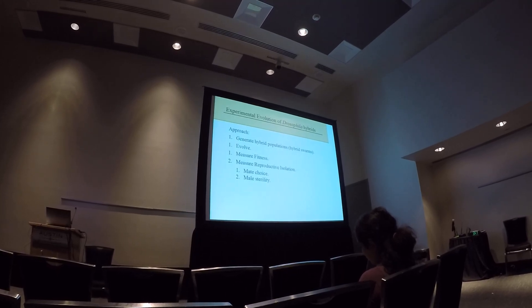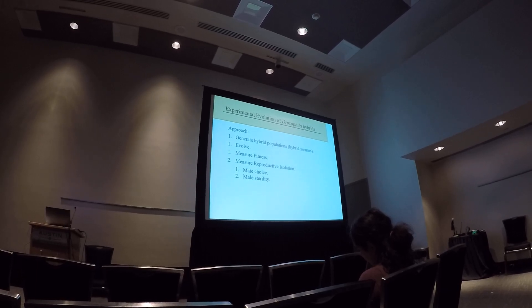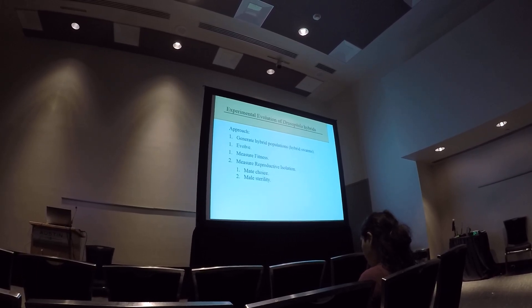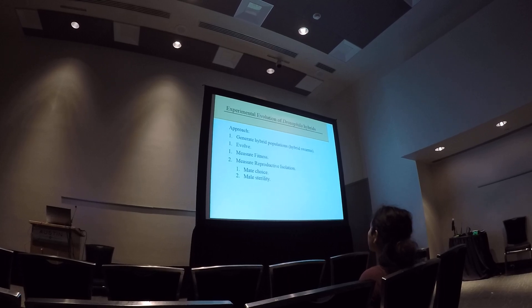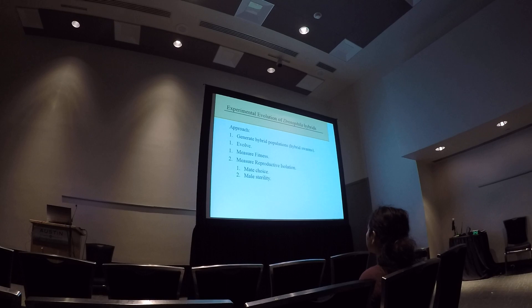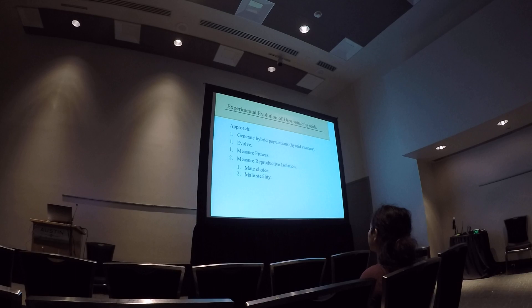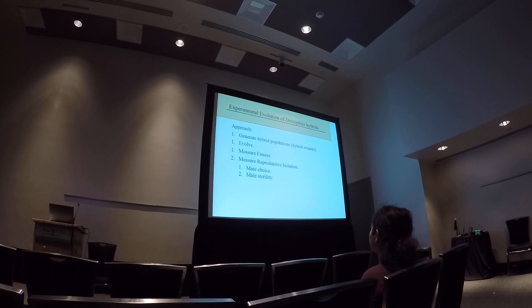And so the basic approach we take: generate hybrid populations, so we kind of force admixture, generate hybrid populations, allow them to evolve alongside their parental species, measure fitness through time, and then also measure measures of reproductive isolation. We focused on female mate choice and male sterility when you cross females from the hybrid populations back to the parental species.